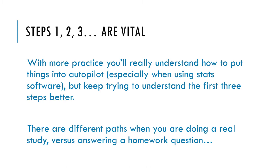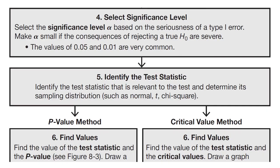Step four is to select the significance level, denoted by alpha — that's the probability of making a type one error, meaning the chance of rejecting the null when it's true. Since it's based on the seriousness of a type one error, alpha will commonly be chosen to be five percent or one percent. The level of significance must be chosen in advance of gathering statistics and determining the test statistic.